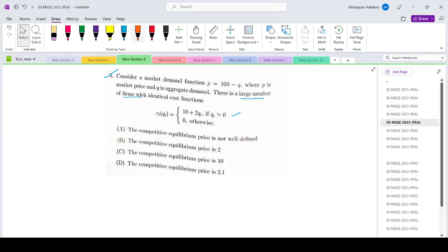Now since it is mentioned that there are large number of forms, this basically indicates a competitive framework. That means the forms will be price takers.